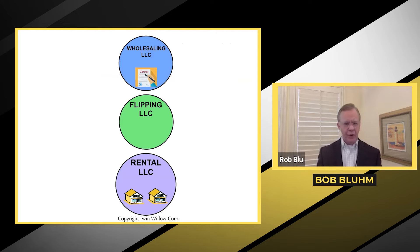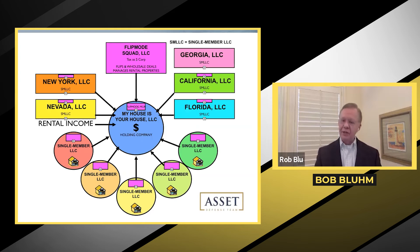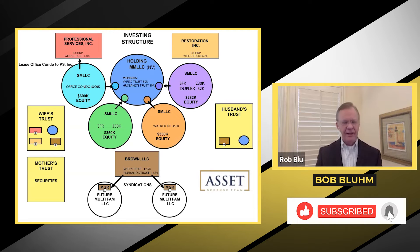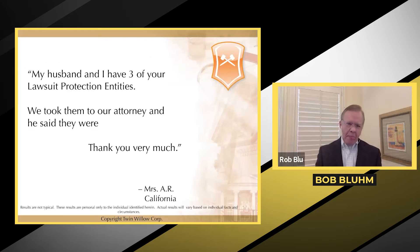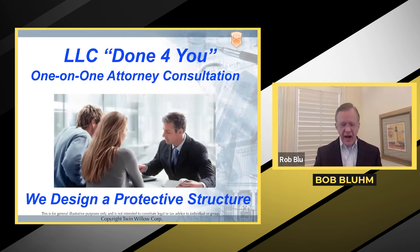Those are some very simple structures. We may just set up one LLC for you or two, but sometimes people come to us having been investing for quite some time and they need a more complex structure. In those cases, we've created many complex structures where we're able to dramatically reduce taxes and dramatically protect you from liability. This is rock solid asset protection. One woman said, 'My husband and I have three of your lawsuit protection entities — we took them to our attorney and he said they were bulletproof.' That is the kind of LLC we set up, not the cookie-cutter kind.